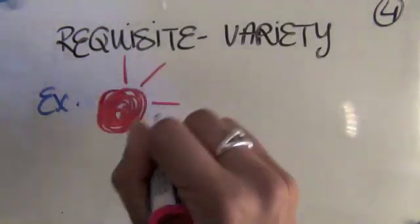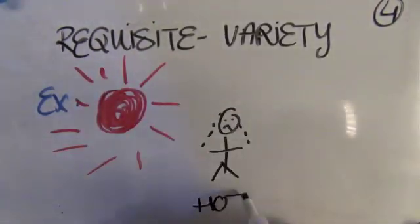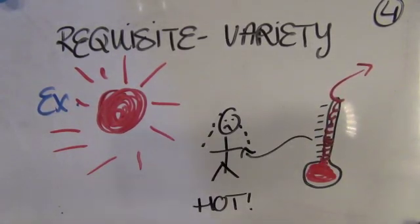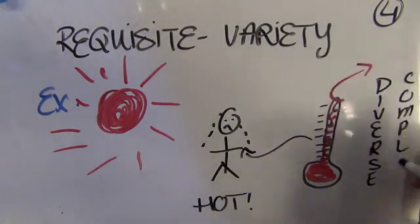The internal regulatory mechanism of a system to be as diverse as its environment in which the system exists, allowing for a system to deal with issues created by the environment, refers to requisite variety.